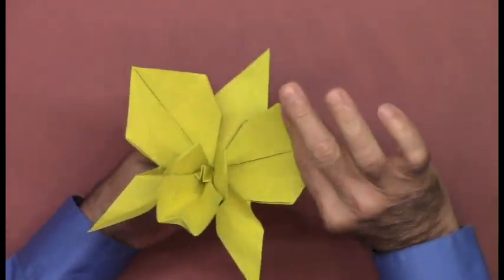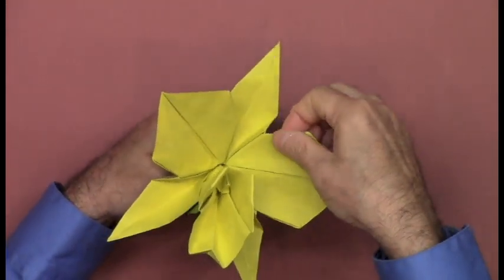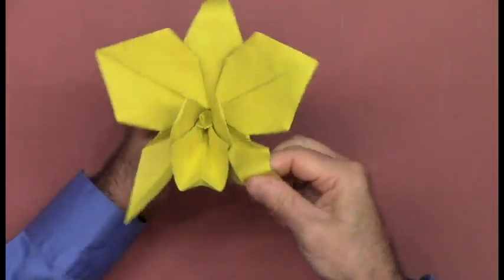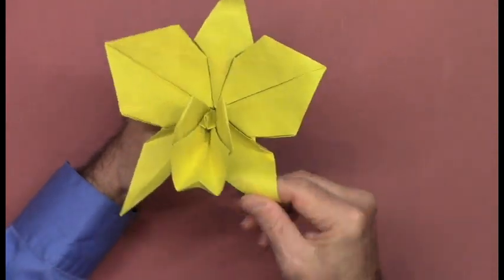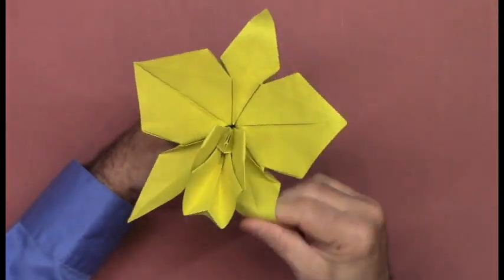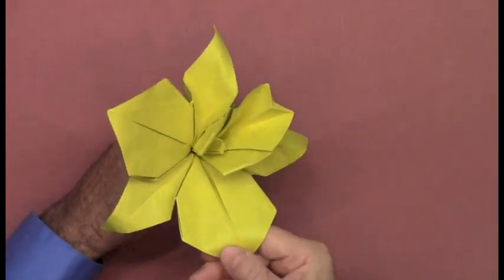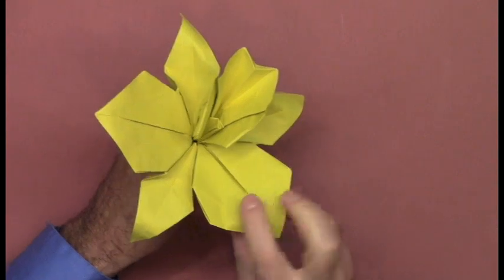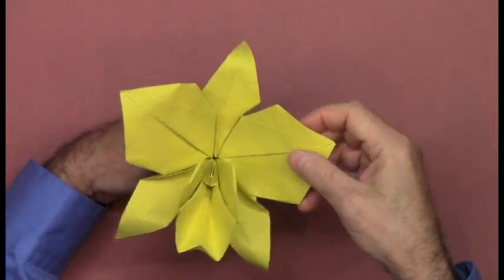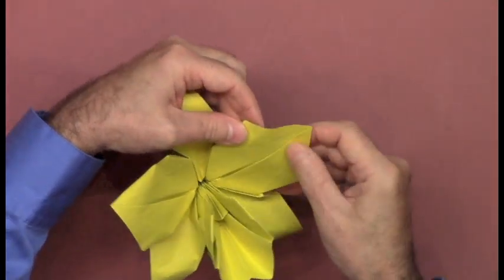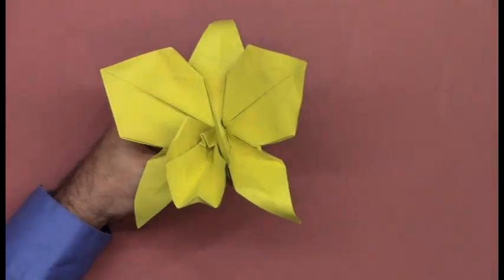And then of course you may curl and embellish any of the sepals and petals outward, inward. You can look at live orchids or photographs of orchid plants and flowers to get an idea of how shapely the parts may be. You can certainly be experimentally creative until you see what you like. And then of course you'd let the flower dry completely.